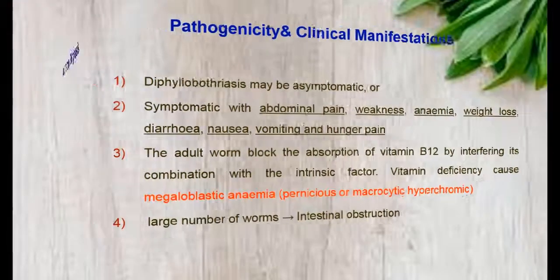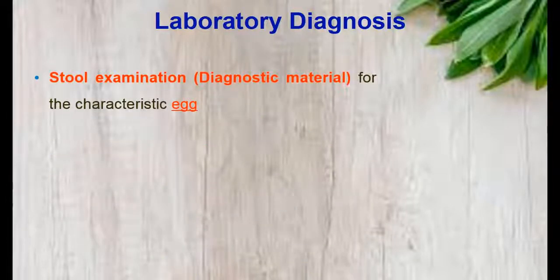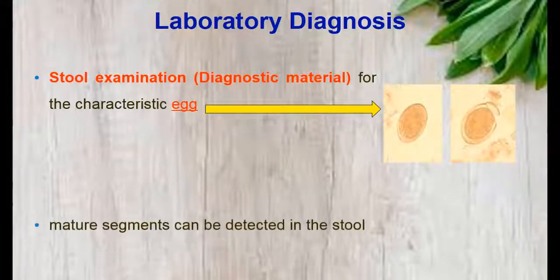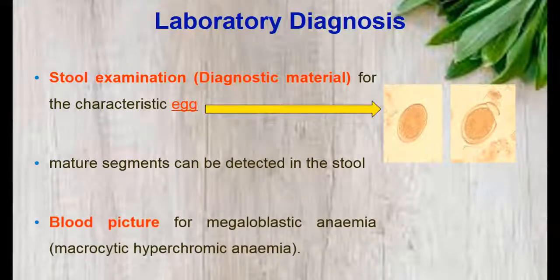Regarding diagnosis, these parasites are identified by stool examination. The diagnostic material is stool and the diagnostic stage is eggs. Also, mature segments may be detected in the stool, and we can perform a blood picture examination for megaloblastic anemia.